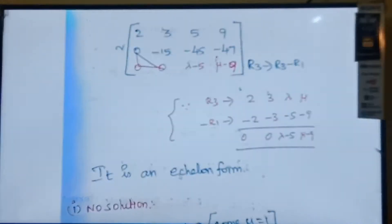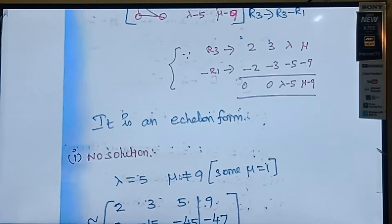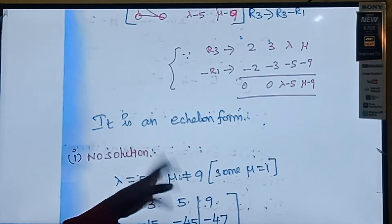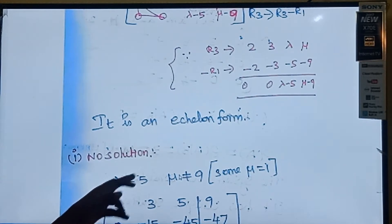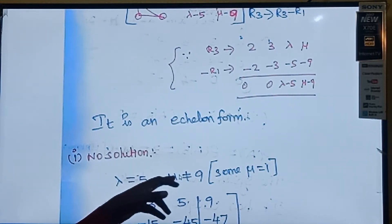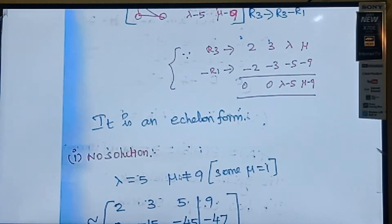For the echelon form, the condition for no solution: we put lambda = 5 and mu ≠ 9. For example, let mu = 1. I am substituting these values into the matrix.